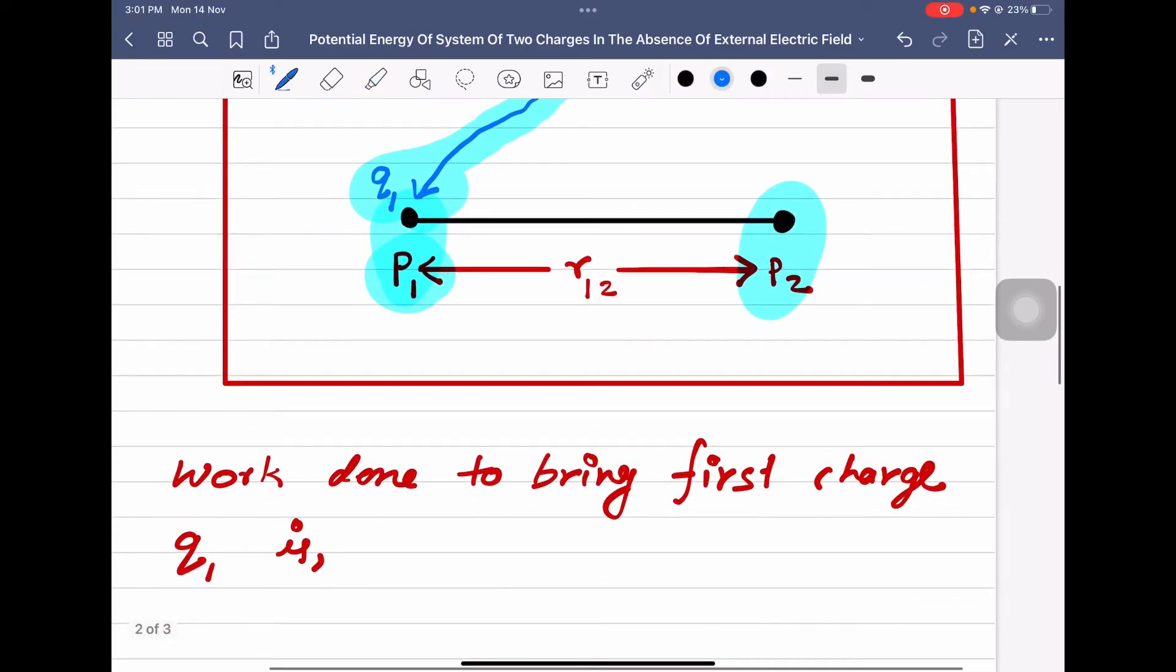the work done to bring first charge Q1 is, since there was no opposition, the work done is equal to zero, because initially the external electric field is zero.